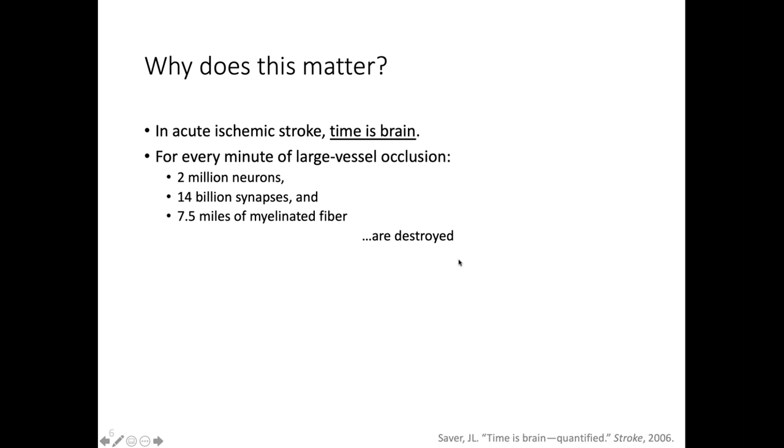There's this great paper from a while ago about time is brain, which is a cool way to think about why I do what I do in the critical care of these stroke patients. For every minute that a large vessel is occluded - carotid, MCA, ACA - 2 million neurons, 14 billion synapses, and 7.5 miles of myelinated fiber are destroyed. That's per minute. It's heartbreaking to hear about patients who thought symptoms might go away, took a nap for five hours, and can't get reperfusion therapy. Think about how much is lost during that time.